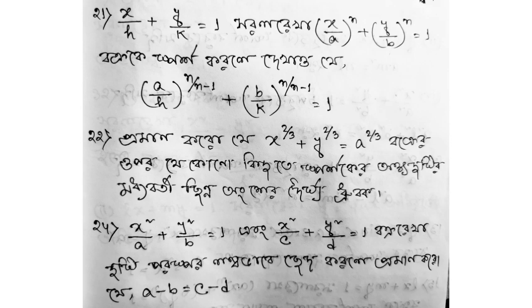Number 20 example: prove that x to the power 2/3 plus y to the power 2/3 is equal to a to the power 2/3. For any point on the curve, show that the portion of the tangent intercepted between the axes — the midpoint lies on the curve. This example is very important. Watch very, very carefully.